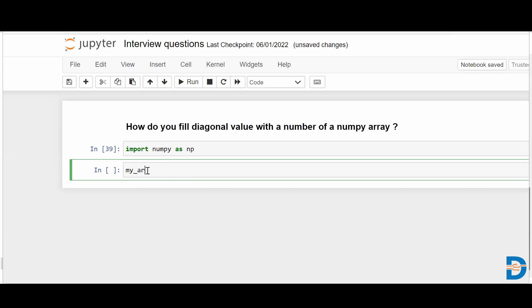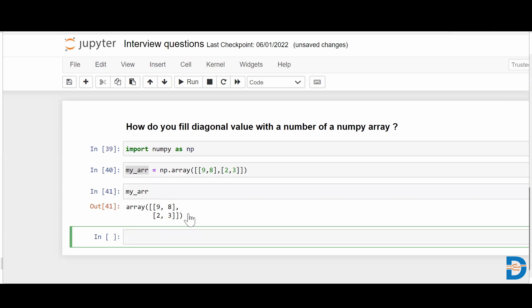I'll say my_arr, that's my array, equals to np.array and inside of it I'll take a two by two matrix, nine comma eight and two comma three. If I run my_arr you'll see that this is two rows and two columns, a NumPy array created with the diagonal values of nine and three.